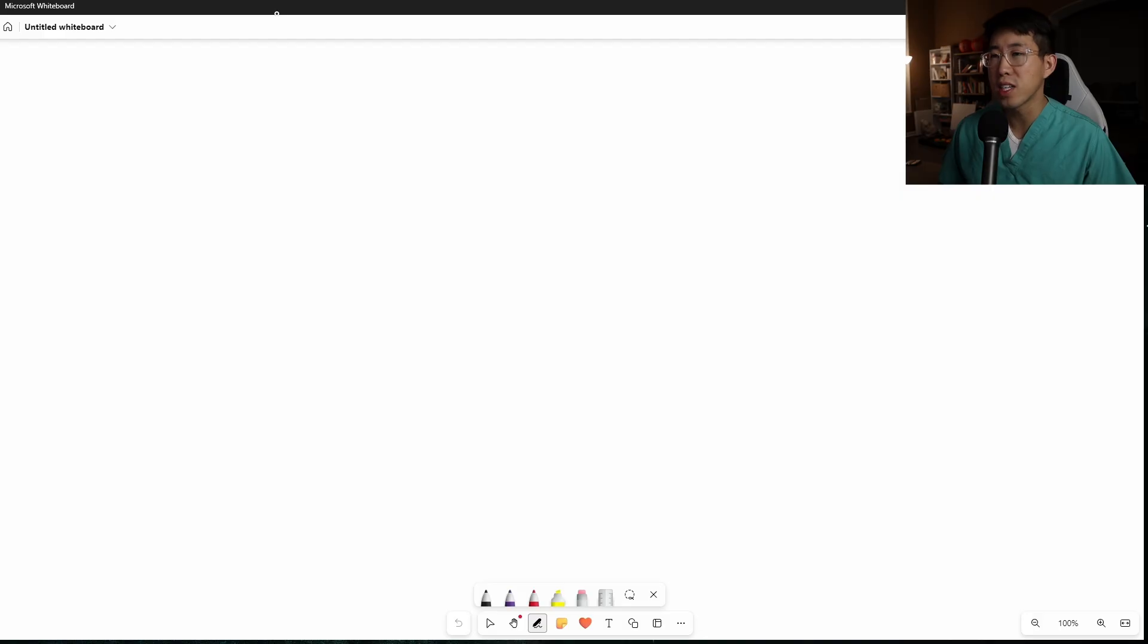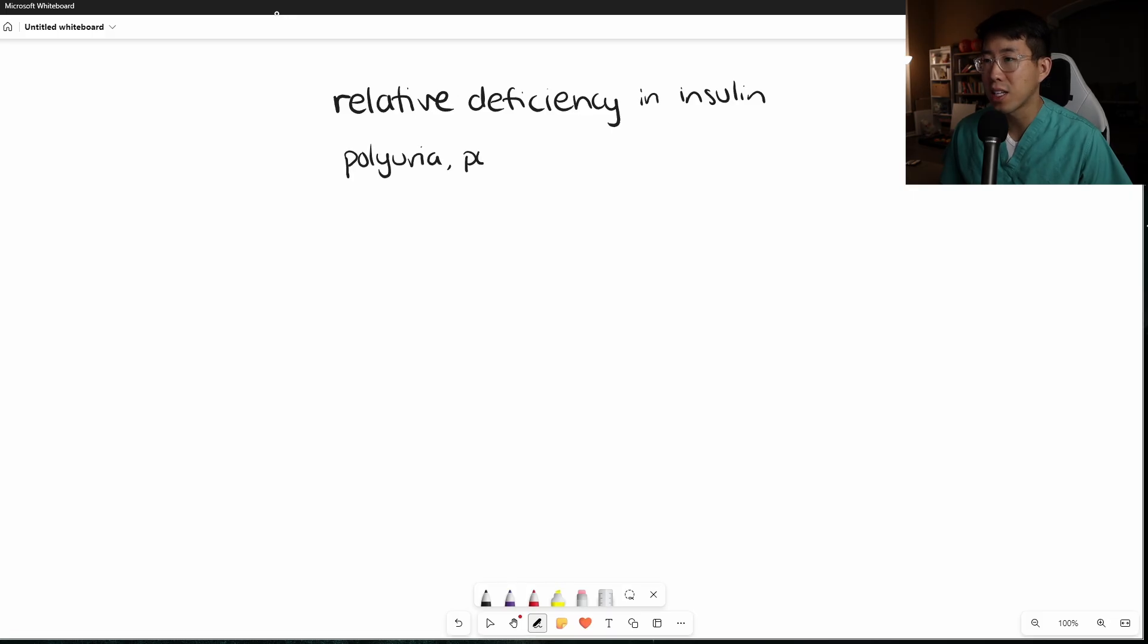Whenever you have a patient who comes in with an extremely elevated glucose, you have to be thinking about DKA or HHS. Both of these conditions are related to a relative deficiency in insulin. The characteristic symptoms include polyuria, polydipsia, and profound volume depletion.